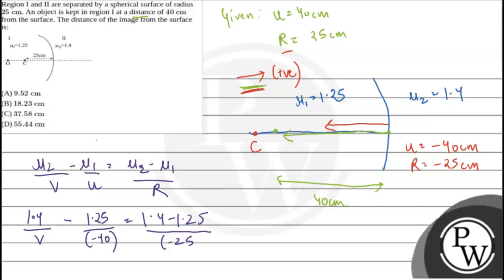Calculating further to find the distance of the image, the final answer is: the distance of the image from the surface is 37.58 cm, which is option C. Hope you understood it well. Best of luck.